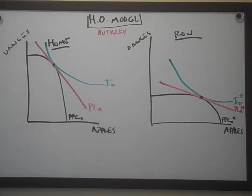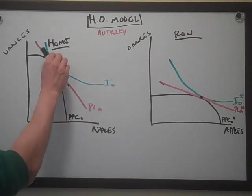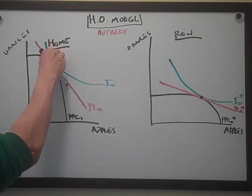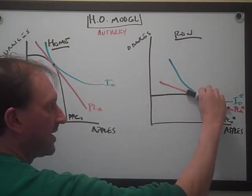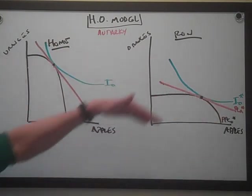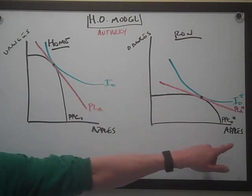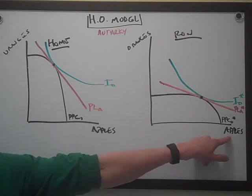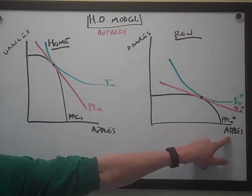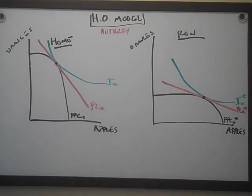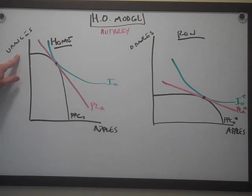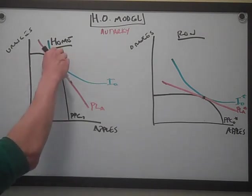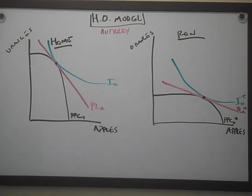We wind up seeing a price line like this in home and a price line like this in ROW — it's much flatter in ROW. That suggests apples are cheap, and that should make sense because they make a lot of apples; they're good at it. It's cold up there. Home has a lot of oranges, they're good at that, so oranges are cheap but apples are expensive — that's why you get the steep slope on that price line.